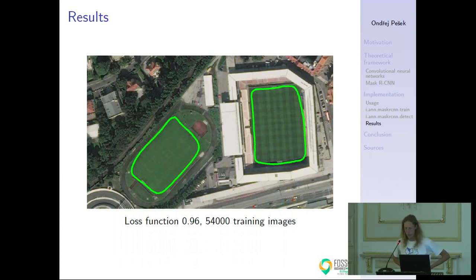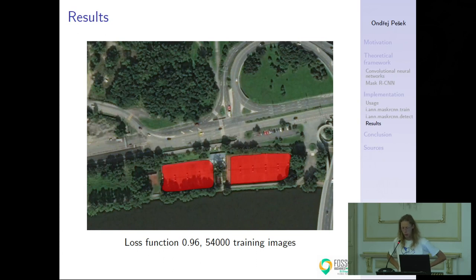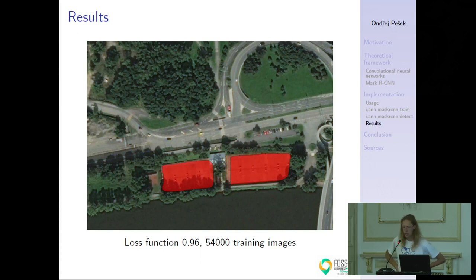Here are some brief results. This is a model trained to detect soccer or football pitches — it depends if you're from the US or Europe — and it works quite well; these are polygons inside the lines. Here is the same for tennis pitches. It's pretty nice because when I used different classifiers, they had a big problem with a tennis pitch covered by shadow — they recognized only the part not covered by shadow. I was pretty happy about this result.